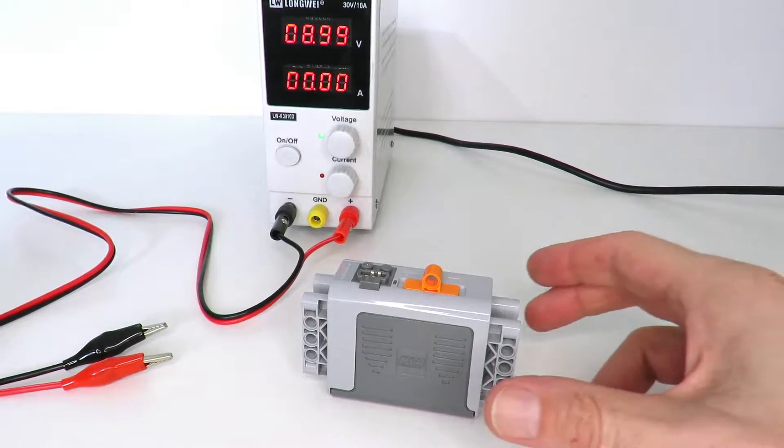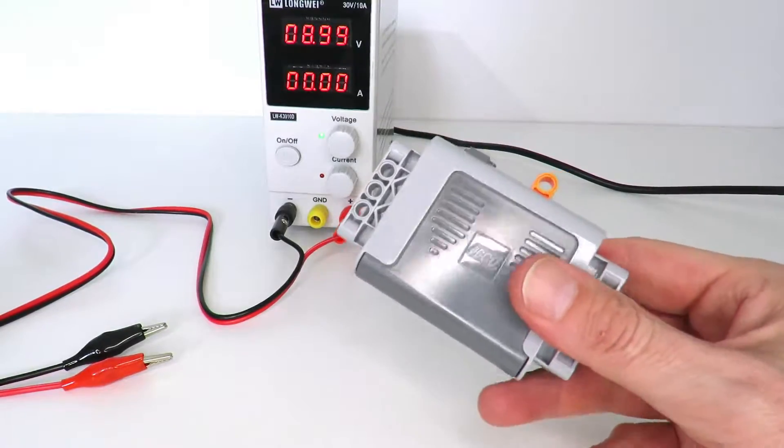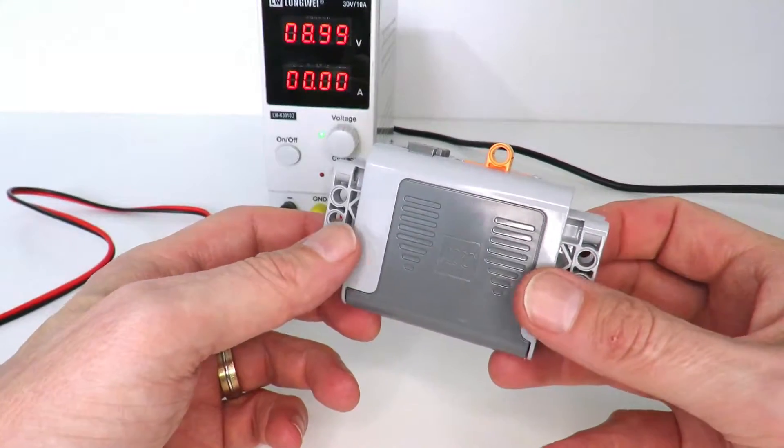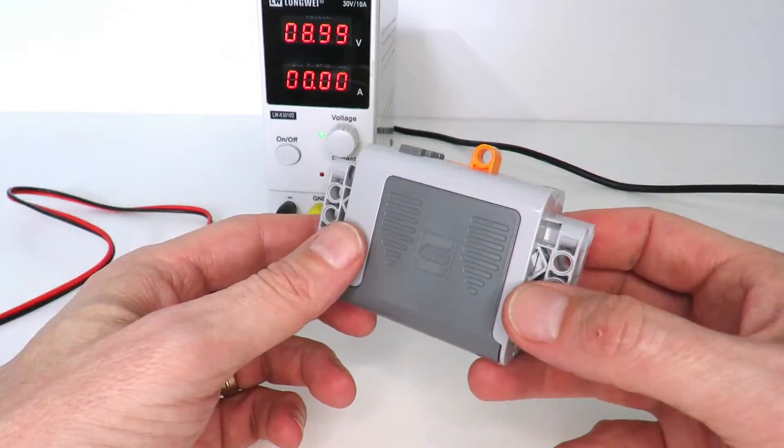Hi, today I'm going to demonstrate how to convert a Lego battery pack like this. This is a nine volt battery pack that takes six one and a half volt batteries. I'm going to show you how to convert it to not have to use those batteries.